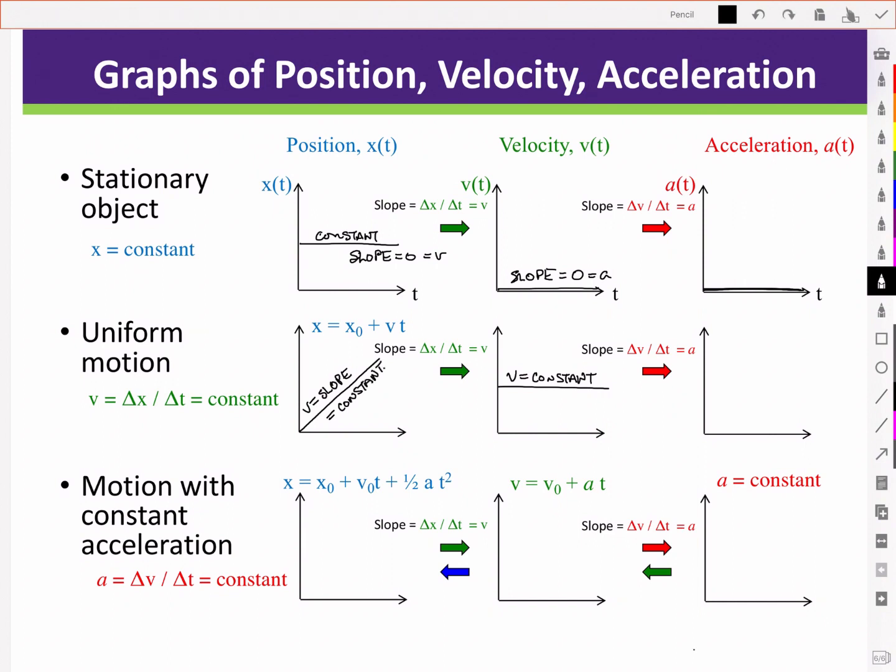Similarly, the slope of the velocity time graph is given by delta v over delta t, which we recognize as the definition of acceleration. Here the slope of the flat or constant velocity line is zero. In other words, the acceleration is zero.